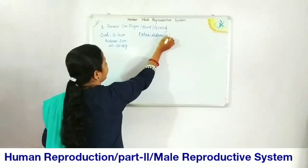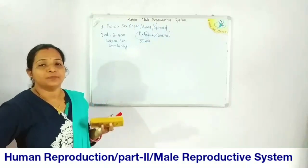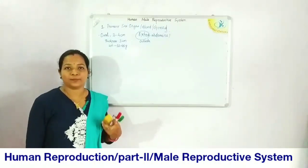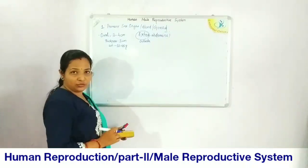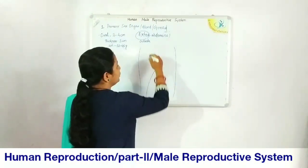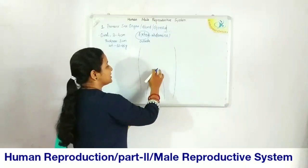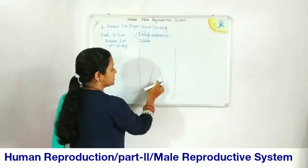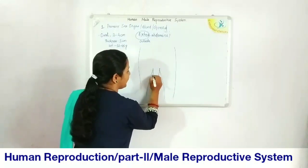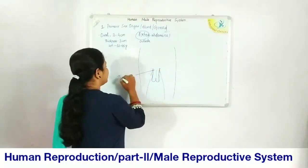In humans, the two testes are extra-abdominal, meaning they are present outside the abdominal or pelvic cavity. The testes are formed during embryonic life inside the abdominal cavity, but after formation they descend through a short passage called the inguinal canal to outside the pelvic cavity.